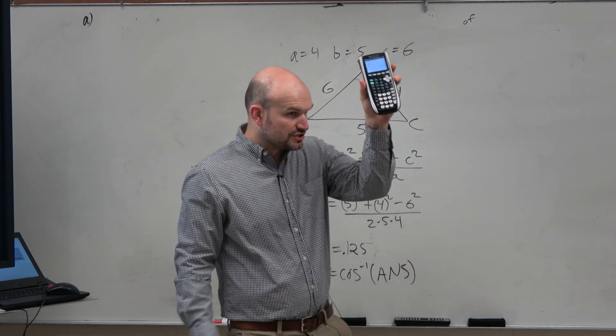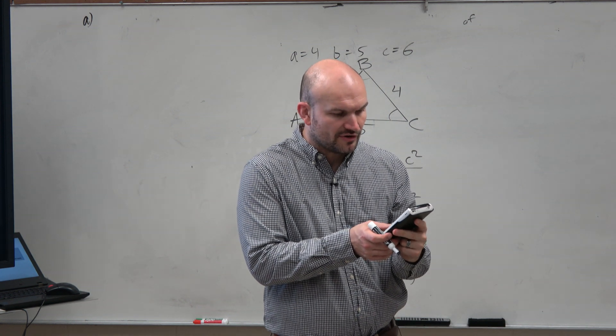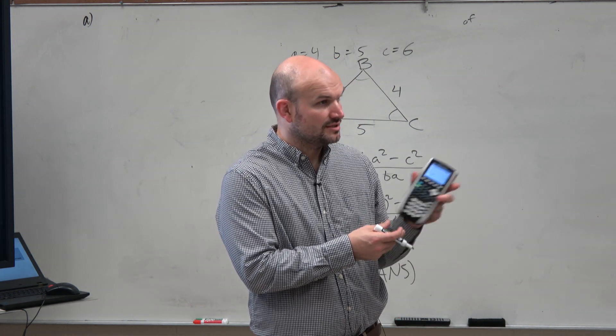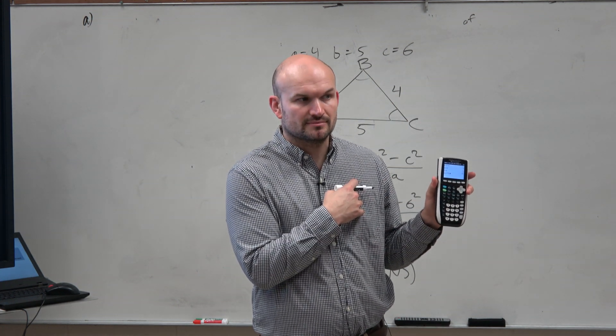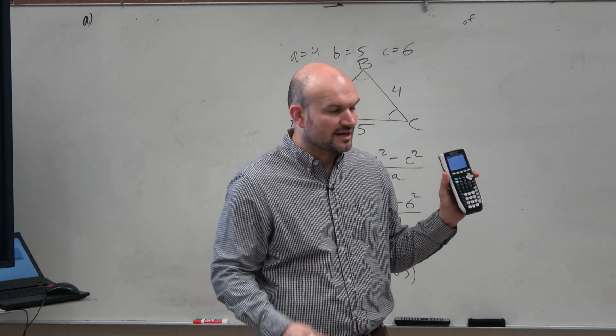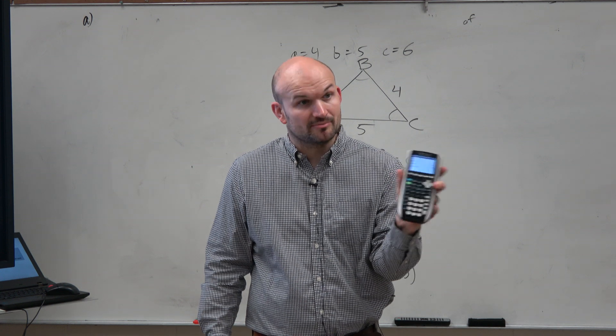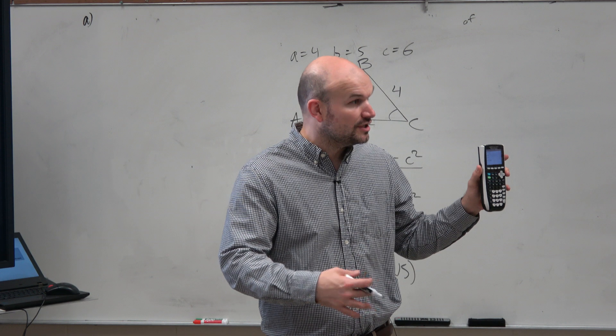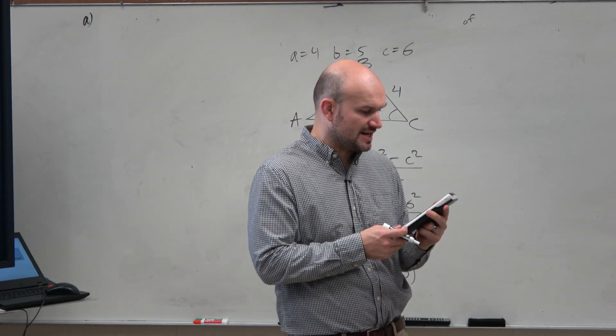So remember, there's a function on your calculator that you can just take cosine inverse, do the second cosine, and then do second answer. And then just take that last answer from there. Obviously, this is easy to retype. But sometimes you have that with eight digits. You're not going to want to round in those digits. Don't round. Use the whole answer. So that's why you want to use that answer feature.